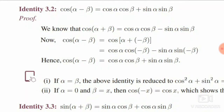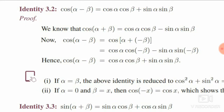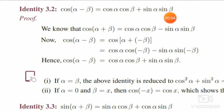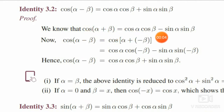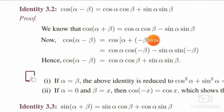Now let's see Identity 3.2: cos of alpha minus beta is equal to cos alpha cos beta plus sin alpha sin beta. We already know that cos of a plus b is equal to cos a cos b minus sin a sin b. Substituting a, b with alpha, beta, we will now prove this identity.